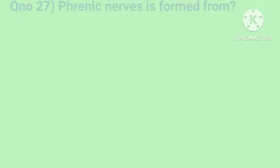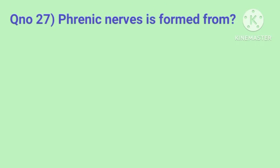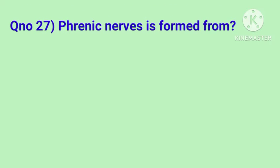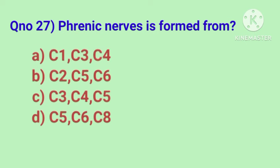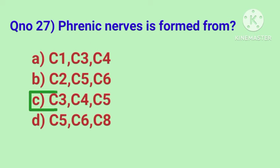Question number 27. Phrenic nerve is formed from? Correct answer is option C, C3, C4, and C5.